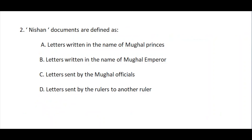Question number two: Nishan documents are defined as — option A: letters written in the name of Mughal princess, option B: letters written in the name of Mughal Emperor, option C: letters sent by the Mughal officials, option D: letters sent by the rulers to another ruler. The correct answer is option A — letters written in the name of Mughal princess.